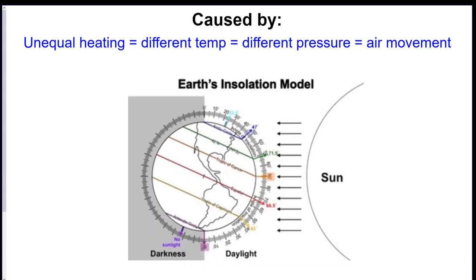Now, wind is actually caused by the fact that the Earth is unequally heated. So if you remember back to astronomy, the Earth is on a tilt. And this is going to cause different sections of the Earth to get different amounts of insolation.